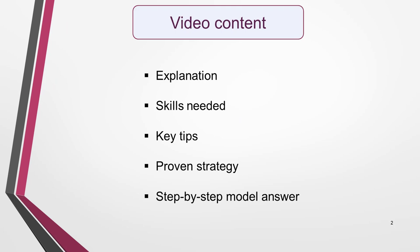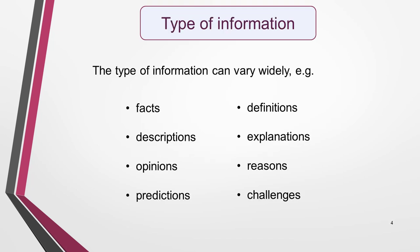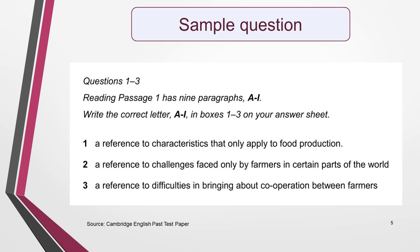Here's what we'll be covering: an explanation of this question type, the skills needed, key tips, the strategy, and examples from real test papers. In matching information questions, you'll be given a set of three to six statements and you have to match the information in each statement to matching information in a paragraph in the reading text. The type of information included in the statements can vary widely — for example, facts, descriptions, opinions, predictions, definitions, explanations, reasons, or challenges.